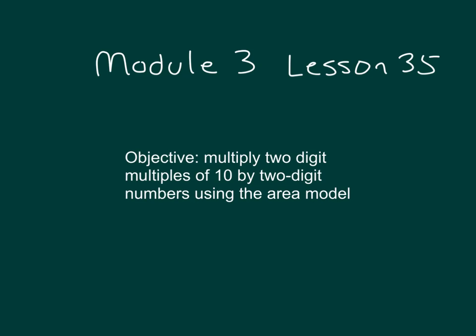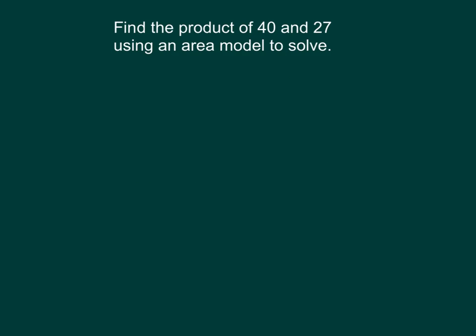The objective is to multiply two-digit multiples of 10 by two-digit numbers using the area model. Here we're asked to find the product of 40 and 27. That means the answer to that multiplication problem.